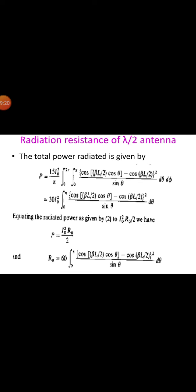Substituting this value, P = (15 * I_0²) / π * ∫₀²π ∫₀π [cos(β*L/2 * cosθ) - cos(β*L/2)]² / sinθ * dθ, which simplifies to: P = 30 * I_0² * ∫₀π [cos(β*L/2 * cosθ) - cos(β*L/2)]² / sinθ * dθ. Equating radiated power to I_0² * R_0 / 2 gives: R_0 = 60 * ∫₀π [cos(β*L/2 * cosθ) - cos(β*L/2)]² / sinθ * dθ, where R_0 is referred to the current maximum.